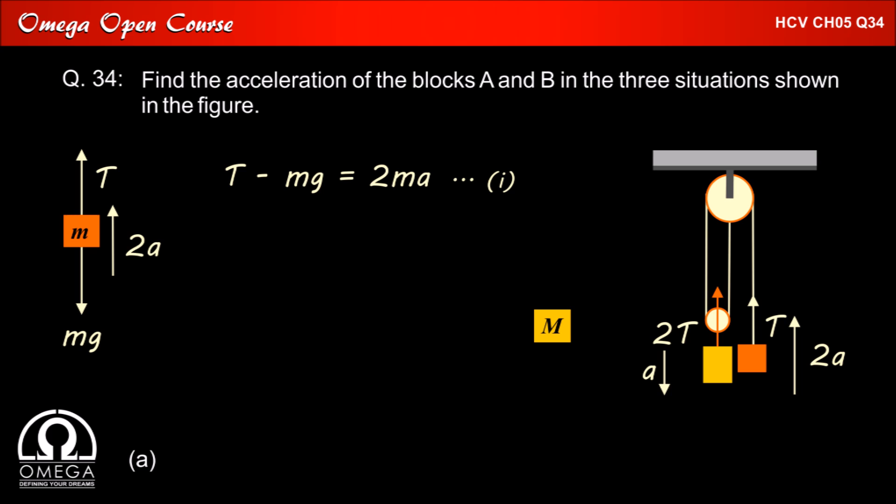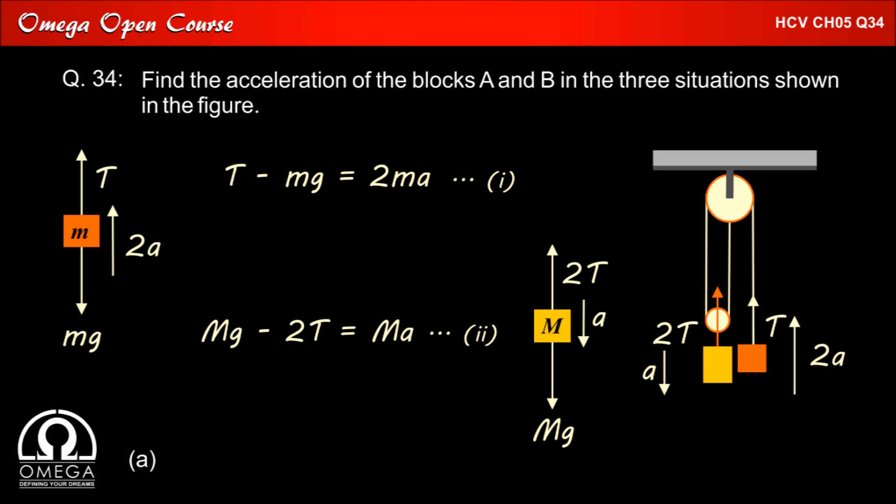Now for block B, gravitational force of capital Mg will act downwards and it is being pulled up by tension 2T. We have assumed that it is moving downwards with acceleration A. Therefore, capital Mg minus 2T must be equal to capital MA.